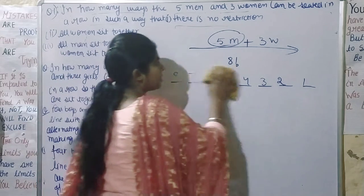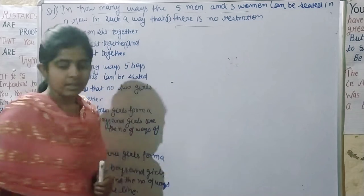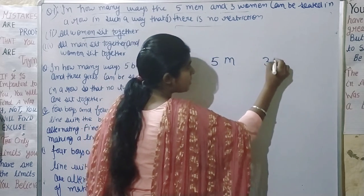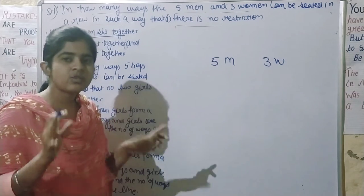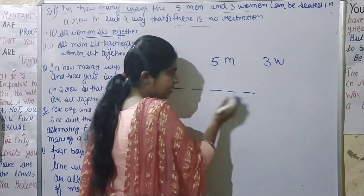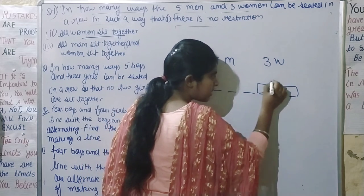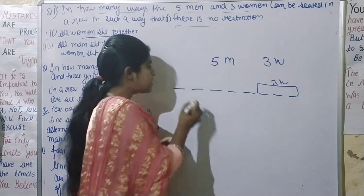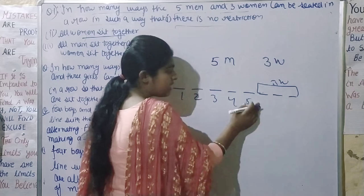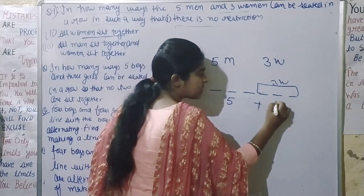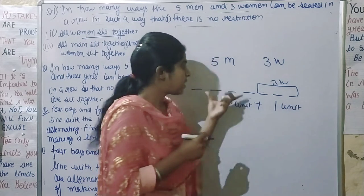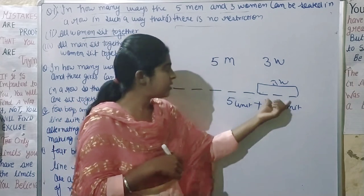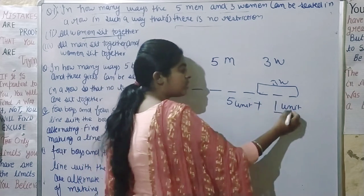Next, there is a condition that all women must sit together. We have 5 men and 3 women, and the women are always together. We treat the 3 women as a single unit. So we have positions 1, 2, 3, 4, 5 for men, and we fix 3 women together as one unit, making a total of 6 units.